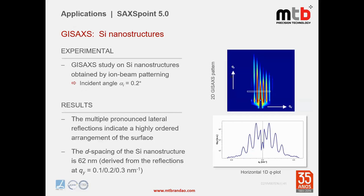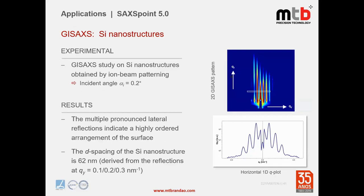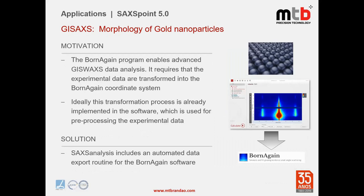GI-SAXS was also used to study a single silicon nanostructure obtained by ion beam patterning. The result showed multiple pronounced lateral reflections indicating high-order arrangement of the surface. Another example is the morphology of gold nanoparticles, where SAXS analysis after background correction yielded a gold nanoparticle diameter of 6 nm and a lattice constant of 8 nm.